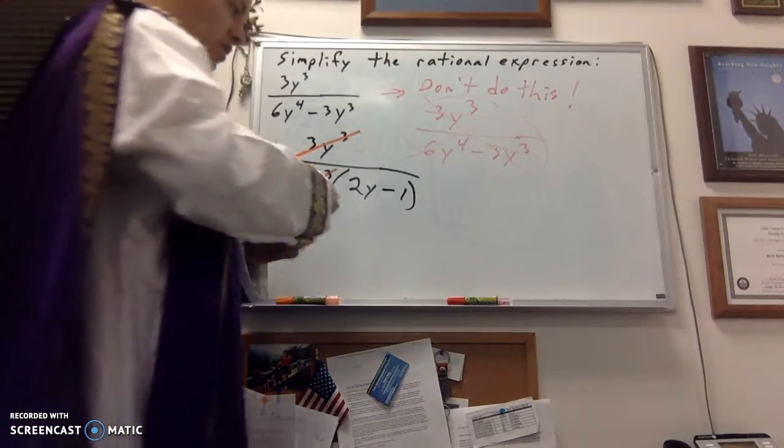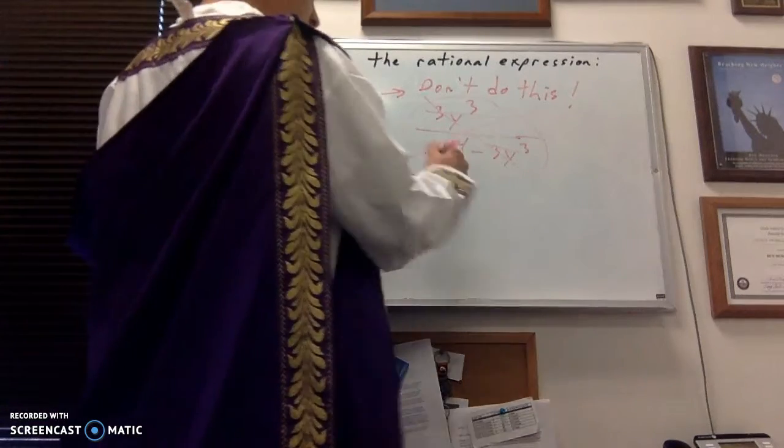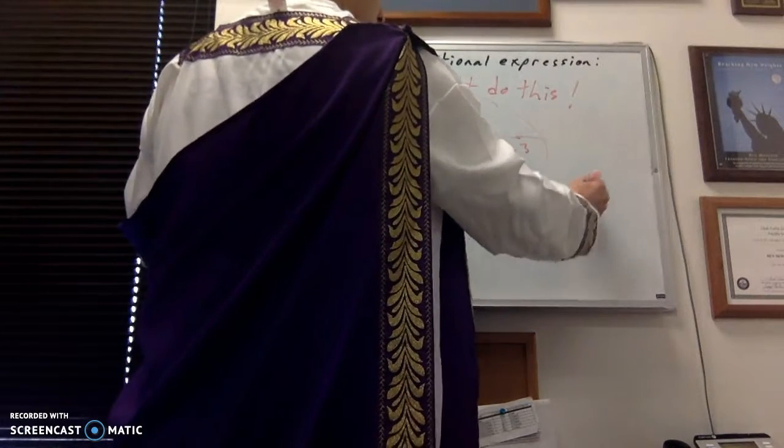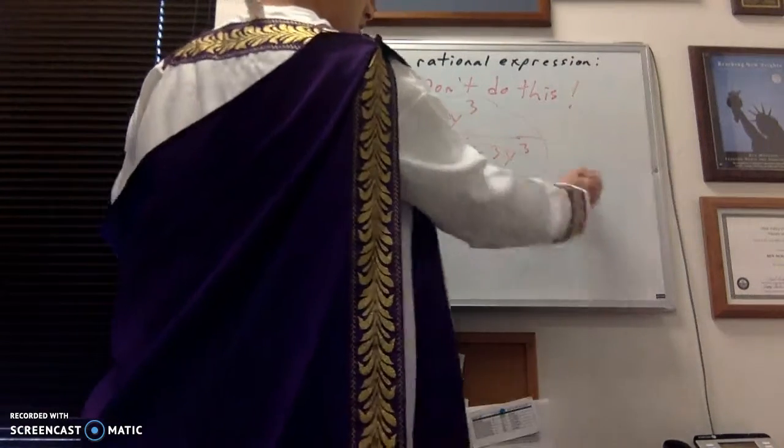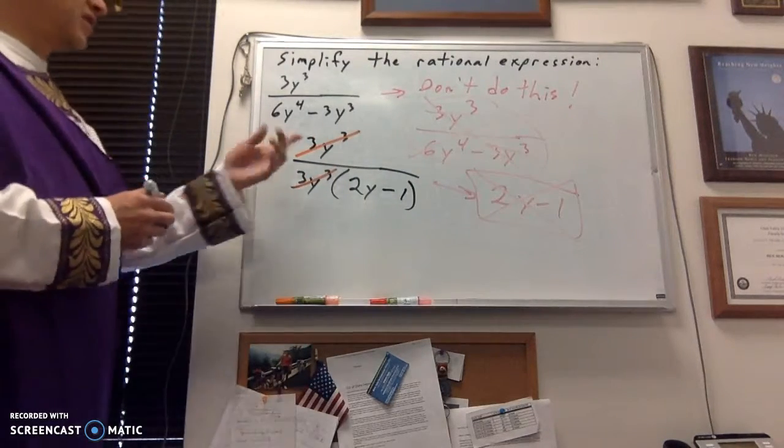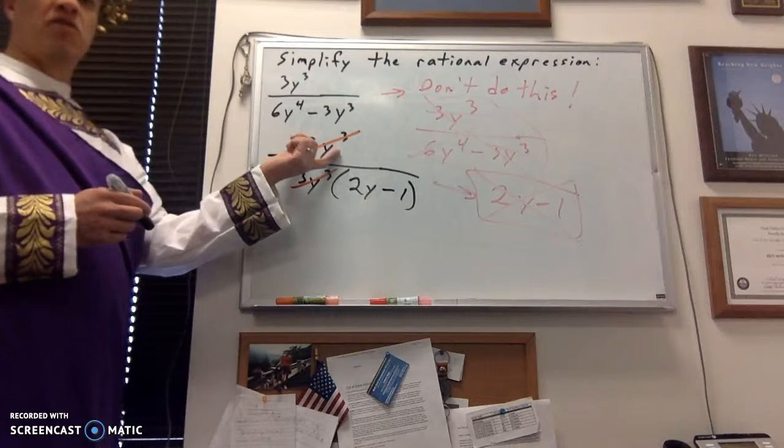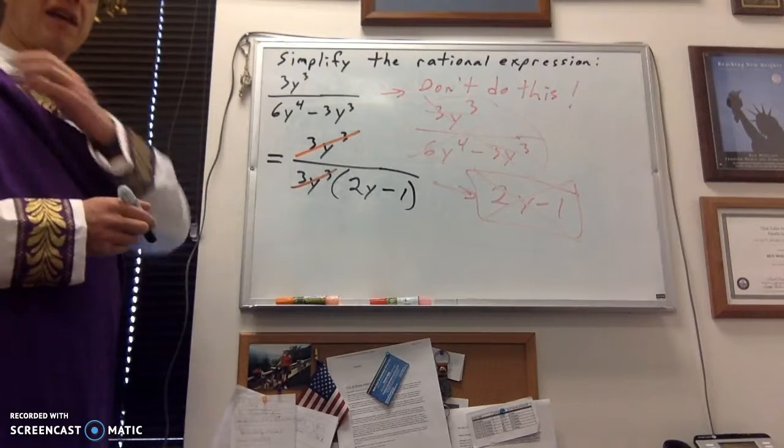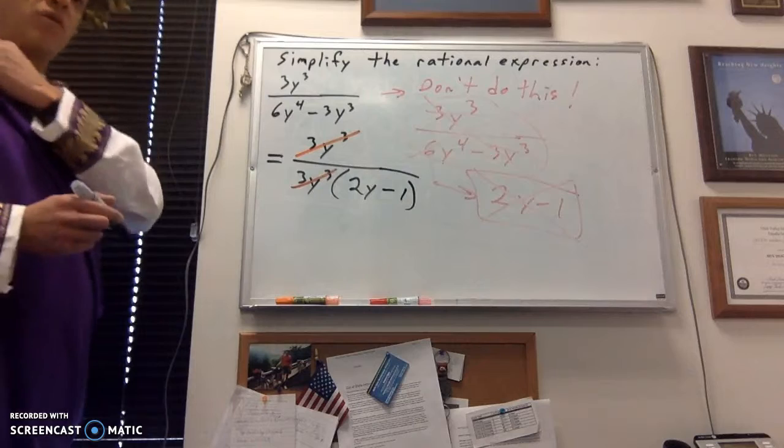Now, you also don't want to do this at this point. Say, oh, my answer is 2y minus 1. Woo, we got it. No, you didn't. Why not? Well, it's because when you divide out something in the numerator, and the entire numerator drops out like that, well, first of all, it doesn't drop out all the way.